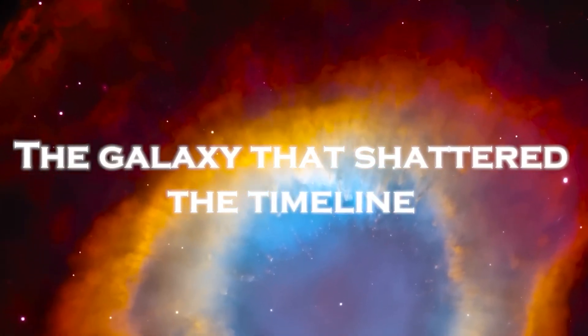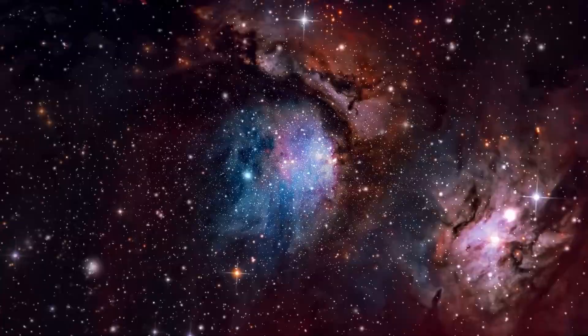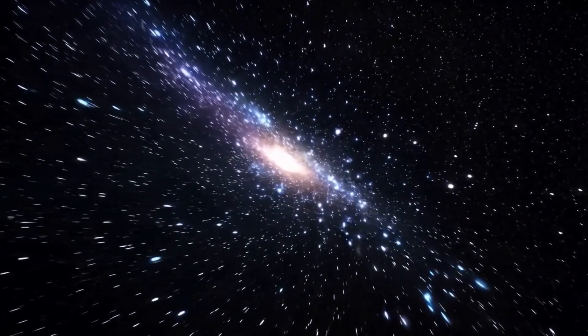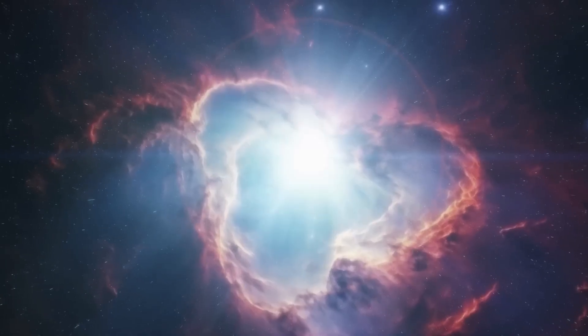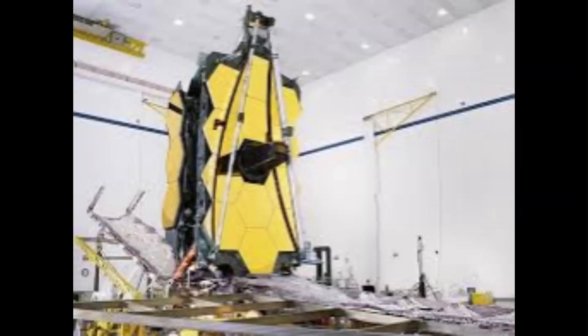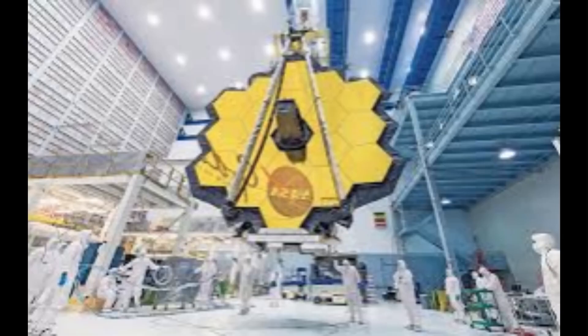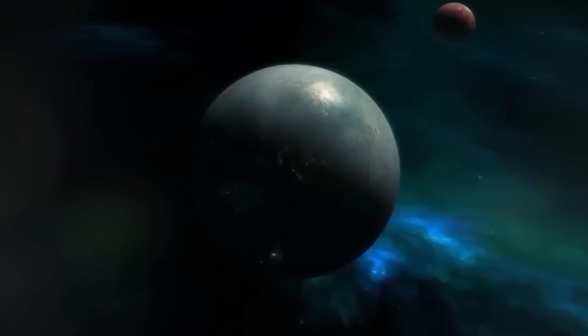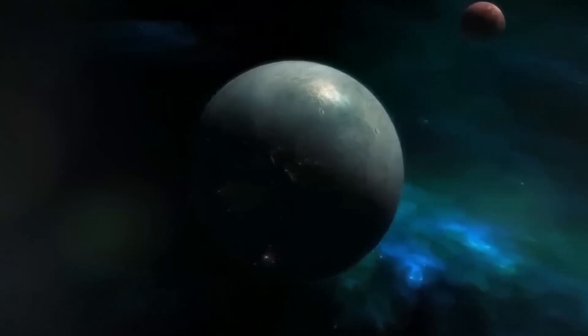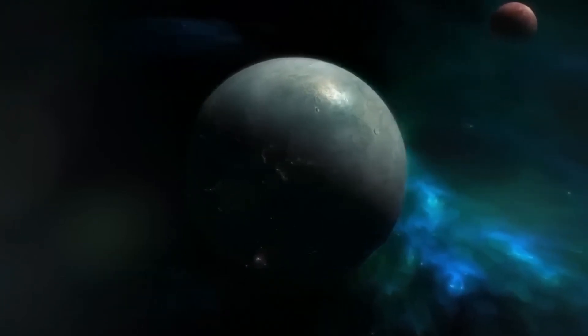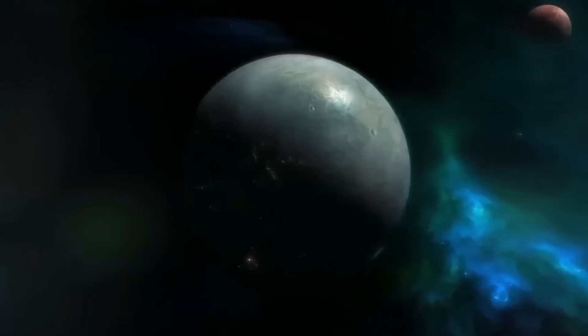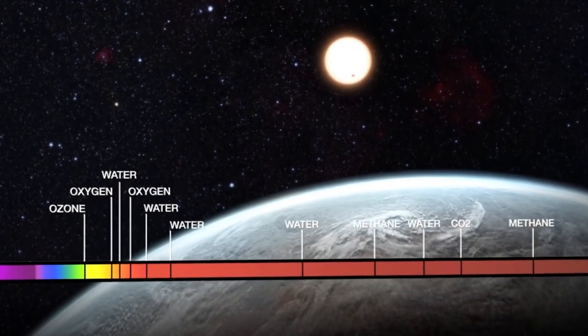The James Webb Space Telescope, designed to gaze into the earliest light of the cosmos, has delivered data so unsettling that even Nobel Prize-winning physicists have begun to break their silence with chilling warnings. One of them summed it up in a simple, terrifying message: This is not our universe. What exactly did the James Webb Telescope find at the very edge of everything, and why are scientists warning that it could force us to rewrite the very foundations of cosmology as we know it?